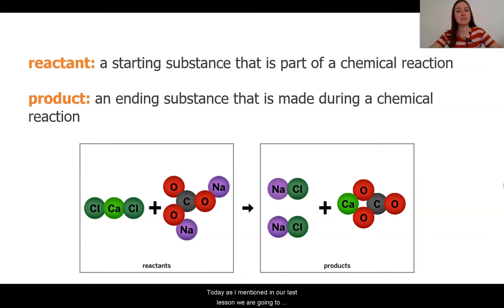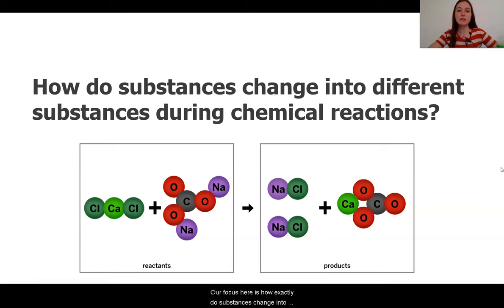So, today, as I mentioned in our last lesson, we are going to take a look at the atomic or molecular level of our first reaction, the sodium carbonate and the calcium chloride. To do that, we are going to use the digital model. Our focus here is how exactly do substances change into something different during a chemical reaction. So, what we're going to be looking for is what are the atoms doing when these two substances are combined? And are we getting something new when these things are mixed together? We'll be able to tell by looking at the repeating atom groups that we see in the digital model.